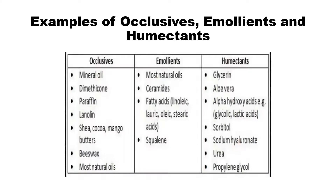Let us now look at specific chemicals screened as occlusive emollients and humectants. Emollients include natural oils, ceramides, fatty acids, and squalene. Humectants increase hydration levels — examples include glycerin, aloe vera, alpha hydroxy acid, sorbitol, sodium hyaluronate, urea, and propylene glycol. Occlusive agents form a protective layer on the skin and include mineral oil, dimethicone, paraffin, lanolin, shea and cocoa butter, mango butters, beeswax, and most natural oils, all of which prevent water loss from the skin.